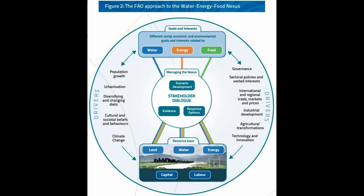Wind power is growing at the rate of 30% annually, with a worldwide installed capacity of 282,482 MW at the end of 2012. Renewable energy resources exist over wide geographical areas, in contrast to other energy sources which are concentrated in a limited number of countries. Figure 7 shows the total world energy consumption by source, which shows that renewables are still a limited portion of energy production.